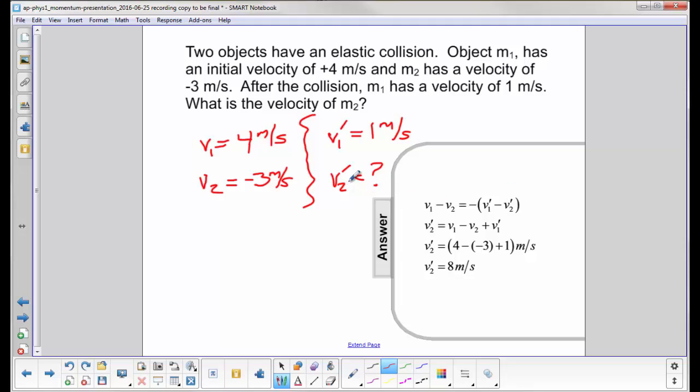Now we want to solve for V2 prime. So we multiply the negative through here, which will give us negative V1 prime plus V2 prime. And then we're going to reverse the sides because we want to solve for V2 prime. We subtract away V1 prime, which actually makes it positive on the other side. And then we plug in the numbers.